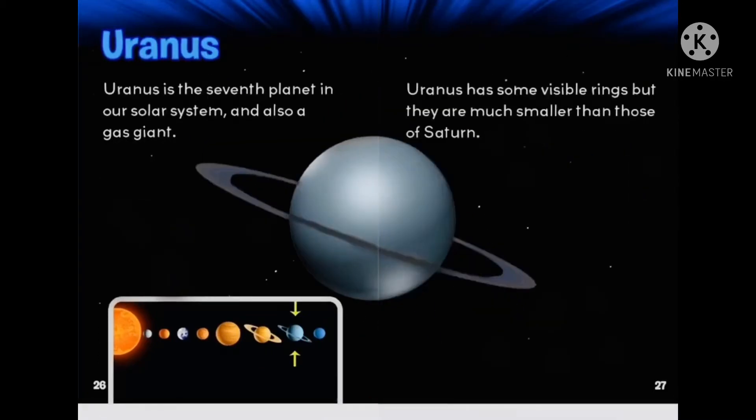Uranus. Uranus is the seventh planet in our solar system and also a gas giant. Uranus has some visible rings, but they are much smaller than those of Saturn.